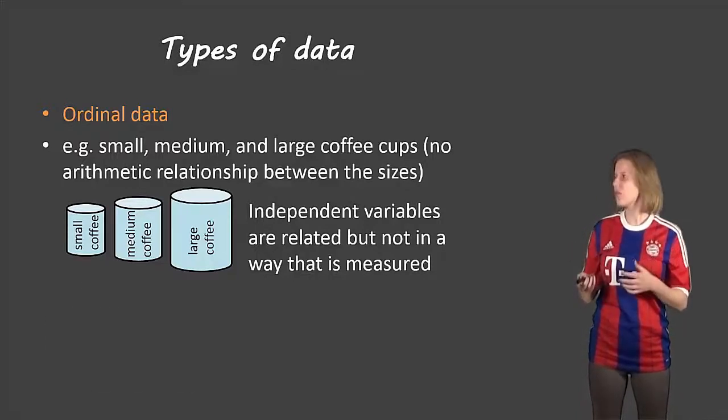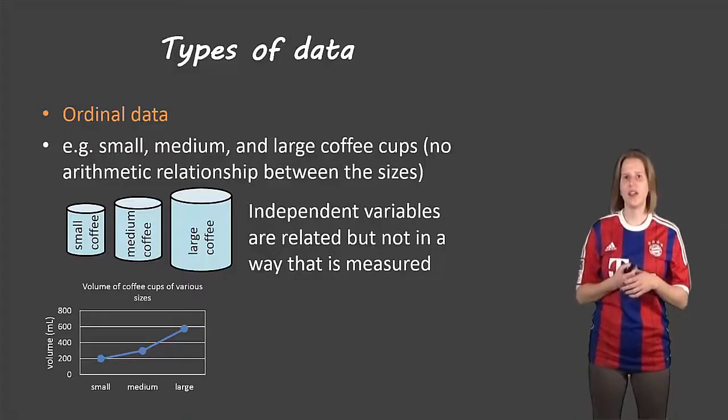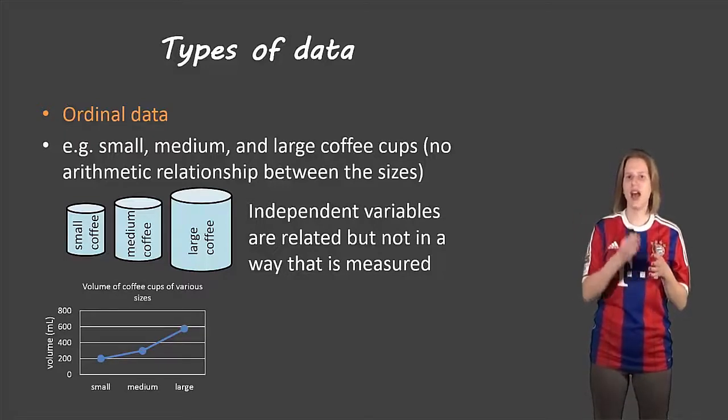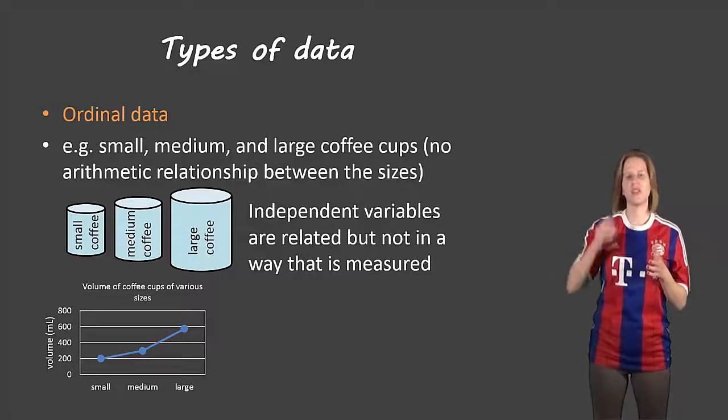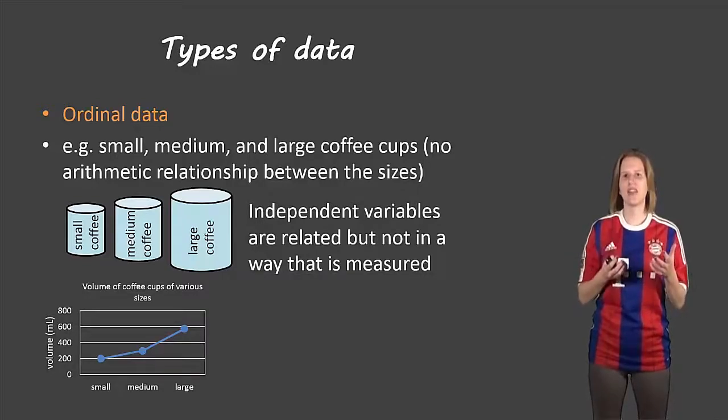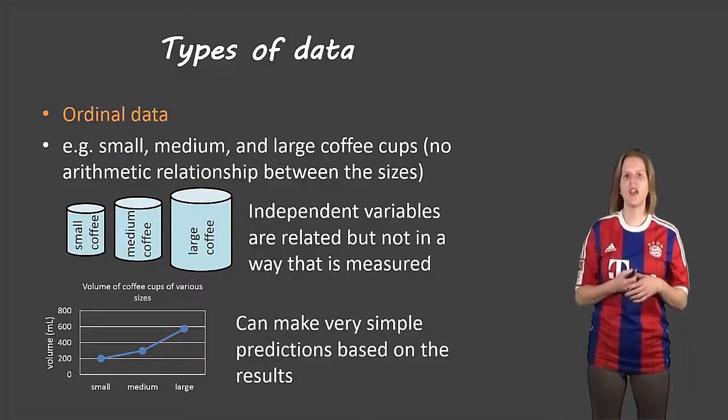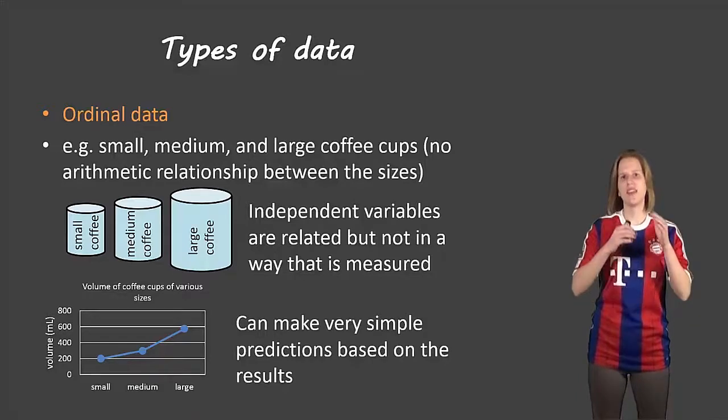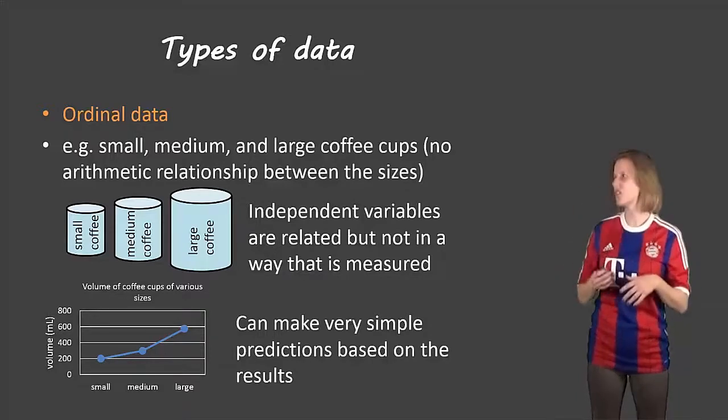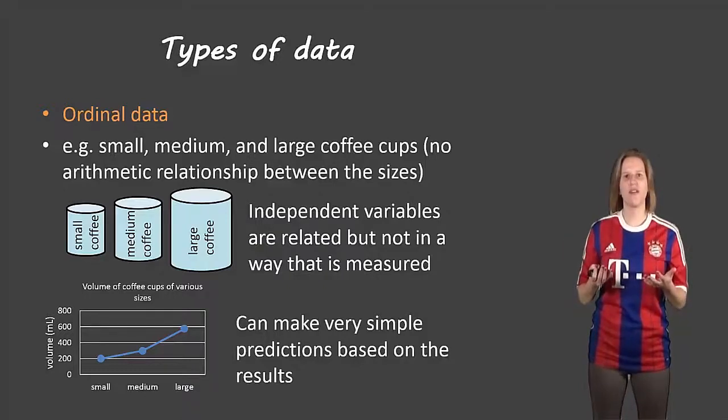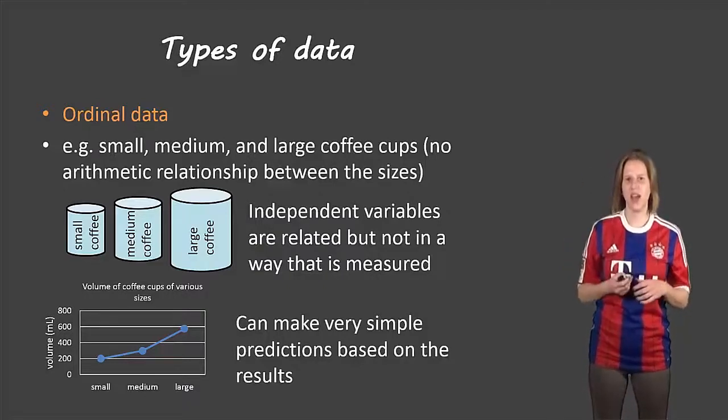So these ones we're going to use a line graph. Here we can state the values along the bottom and values along the side, but we can't state for sure that these are going to have a certain very specific relationship. So although we can make predictions, our predictions are not as solid because we don't know for sure the amount that those coffee cups changed. If we had an extra large coffee, we couldn't predict the size of that coffee.